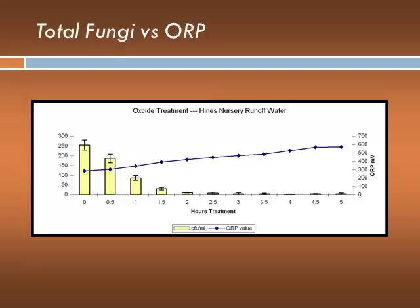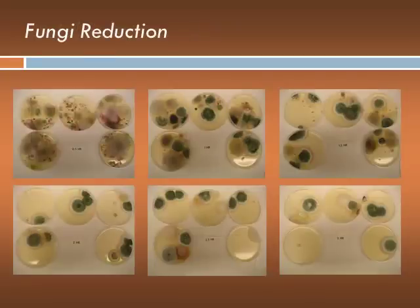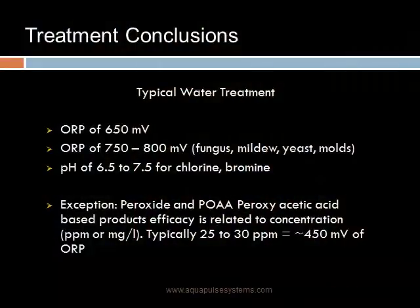This is a study done on nursery runoff water shown over time, demonstrating that as ORP increases, there is a reduction in fungus. This again shows progressive fungus reduction on samples taken from that runoff water. In typical water treatment, you would run an ORP of 650 millivolts, with 750 to 800 millivolts for fungus. Peroxides and peroxyacetic acid tend to produce lower ORP values and are typically around 400 to 450 millivolts for about 25 to 30 parts per million of chemical.